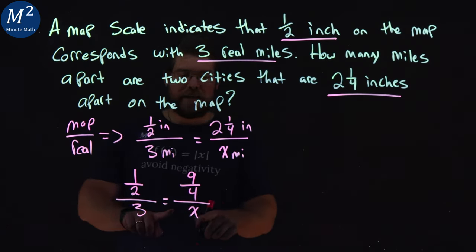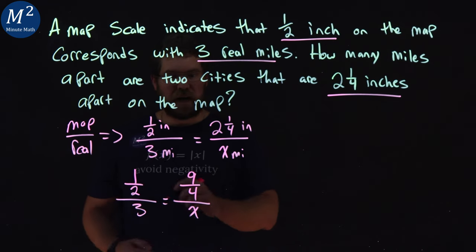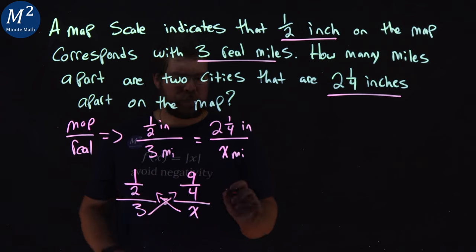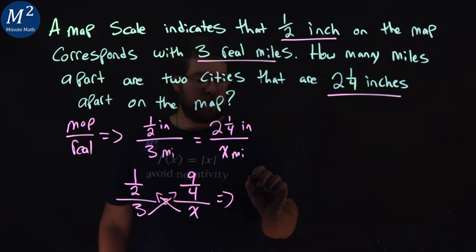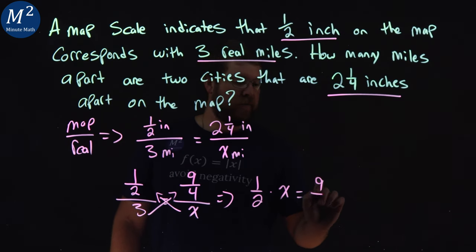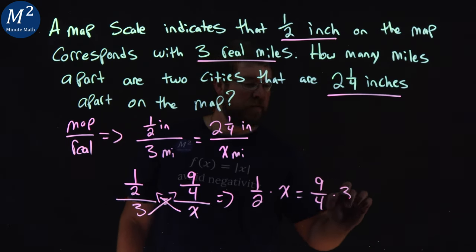I want to multiply each denominator to the other side. Kind of just bringing them up like this. So what that gives us is one-half times our x value equals nine-fourths times our three.